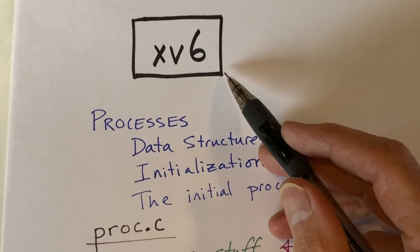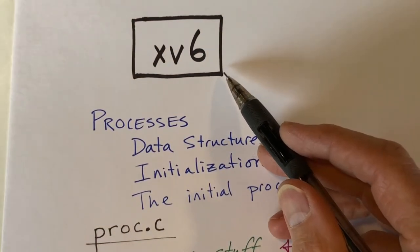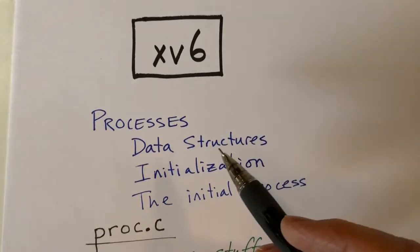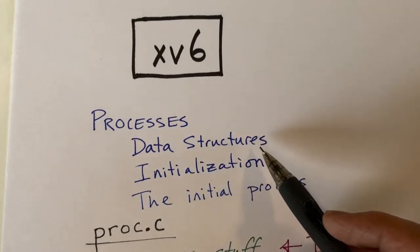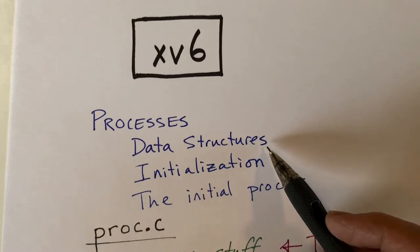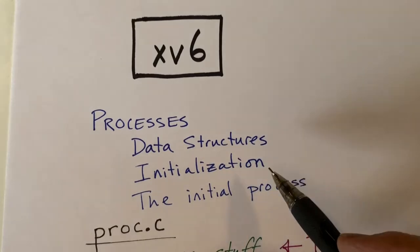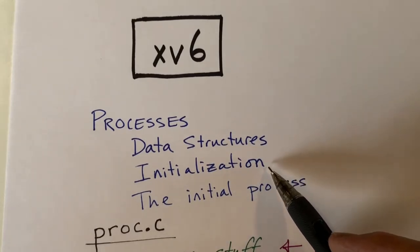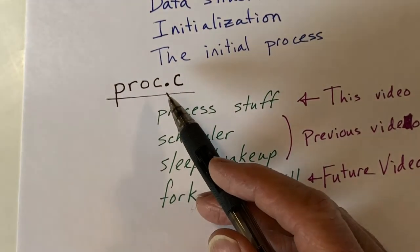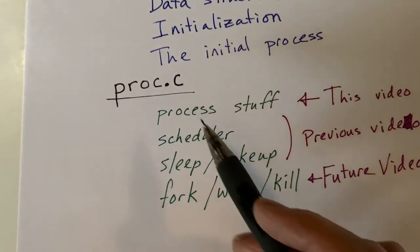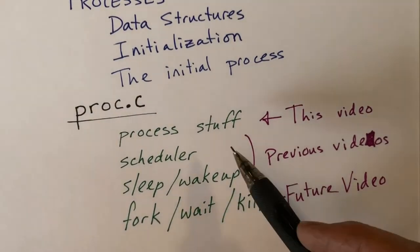This video is part of a series on the xv6 operating system kernel. In this video, I'm going to talk about processes and, in particular, the data structure that is used to represent a process. I'll talk about how the array of proc structures is initialized and how we set up the data for the initial first process. This stuff comes from the file proc.c, which also contains a bunch of other stuff.